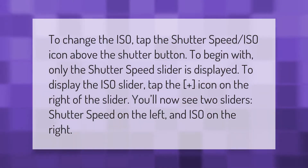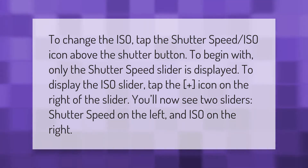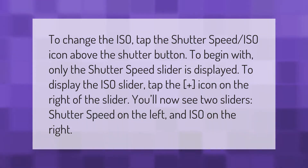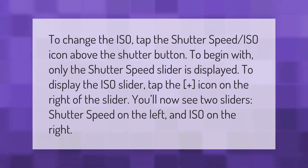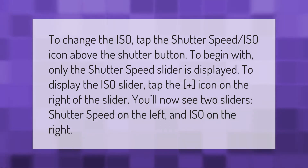To change the ISO, tap the shutter speed/ISO icon above the shutter button. To begin with, only the shutter speed slider is displayed. To display the ISO slider, tap the plus icon on the right of the slider. You'll now see two sliders: shutter speed on the left and ISO on the right.